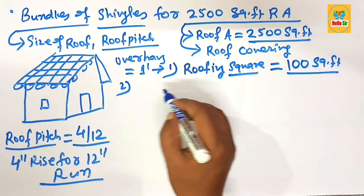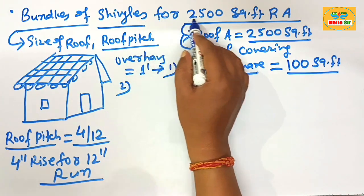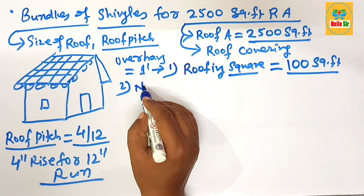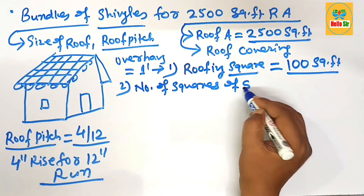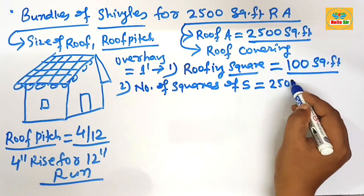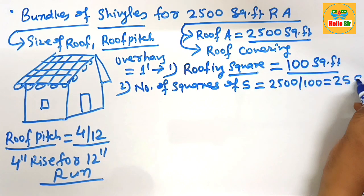A square is shorthand term used in roofing industry which is equal as 100 square feet. And if you have question to find out how many squares of shingles do I need for 2500 square footage roof area. Then you calculate numbers of squares of shingles. You just need to divide that one 2500 by 100. That will come about 25 square.